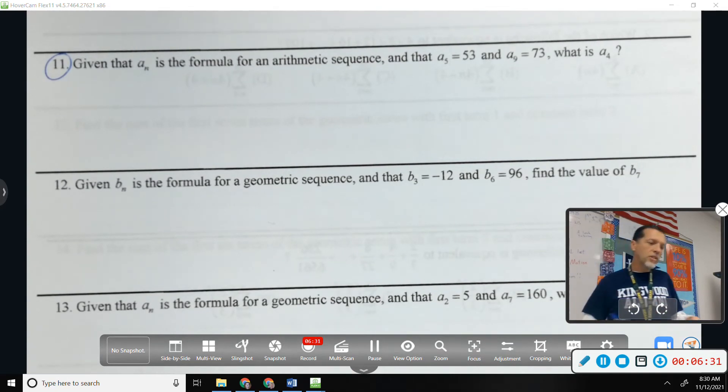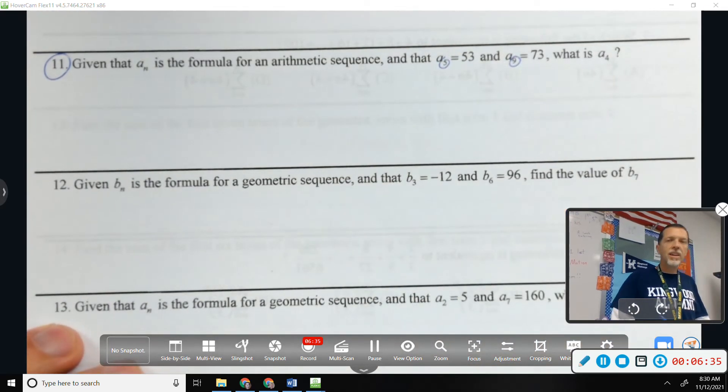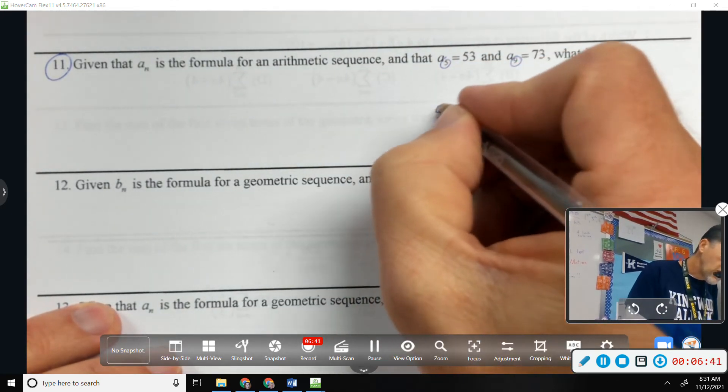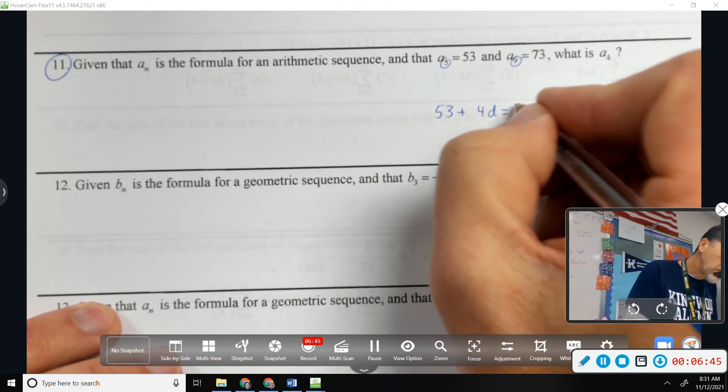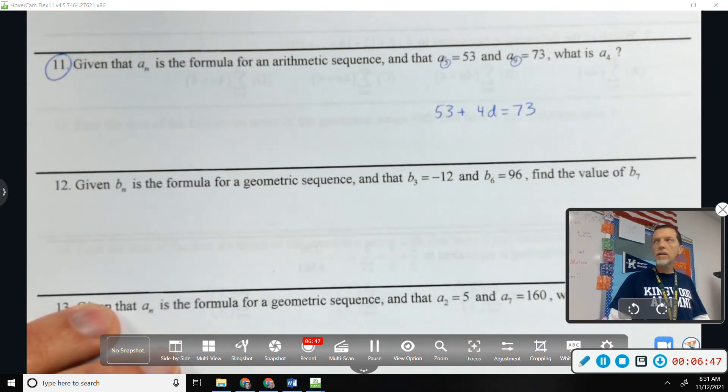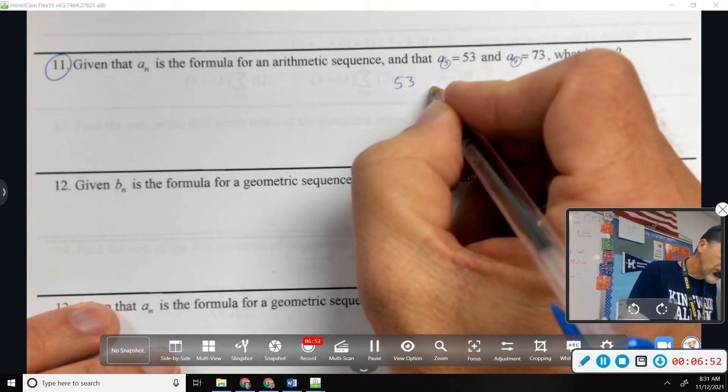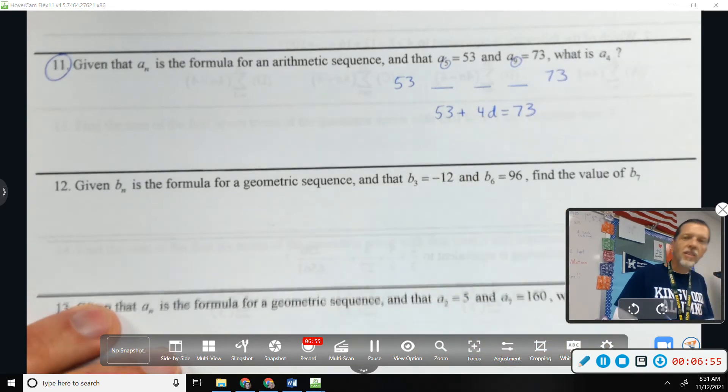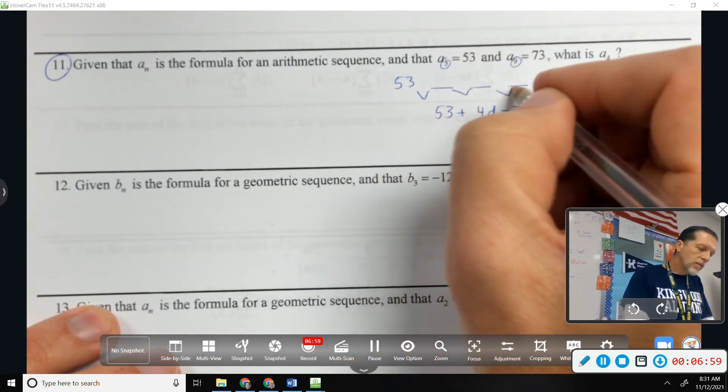Some people are going to draw out the steps. Other people are just going to say, well, if I'm going from 5 to 9, how many steps is that? 4. So, some people are going to say 53 plus 4 steps is 73. Other people are going to write out 53 and then term 6, 7, 8, 9 is 73. And then realize that 53 plus 4 steps is 73.